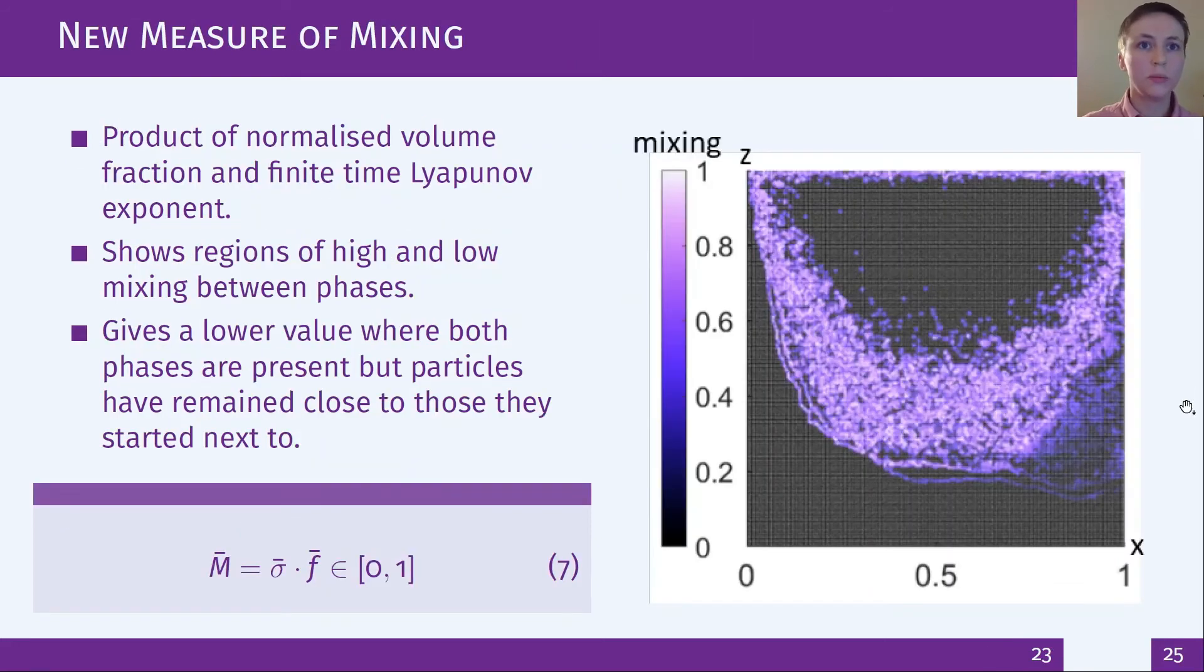So then I developed a new measure which aims to take these advantages of different measures that we've just looked at and combine the normalized volume fraction and FTLE to show where both phases are present and where there has been large relative movement of particles. It looks generally similar to the Robinson measure so we're getting all of that information but also we can note that there's a region here with lower value since the particles here have moved less relative to each other than other areas of mixing.